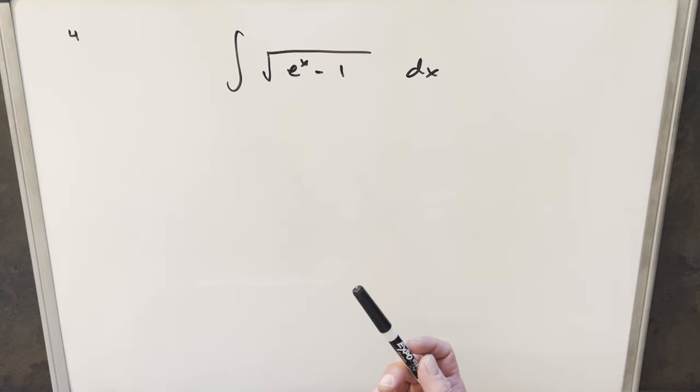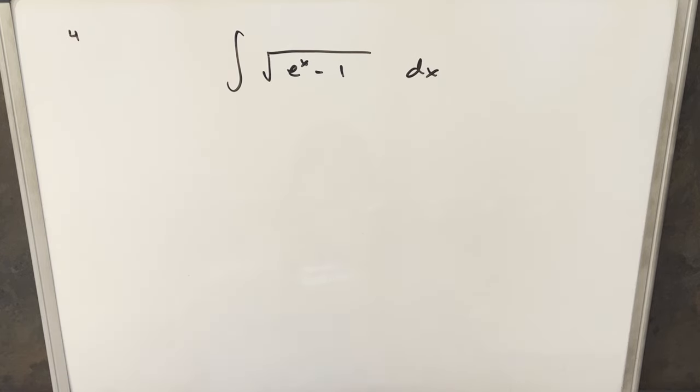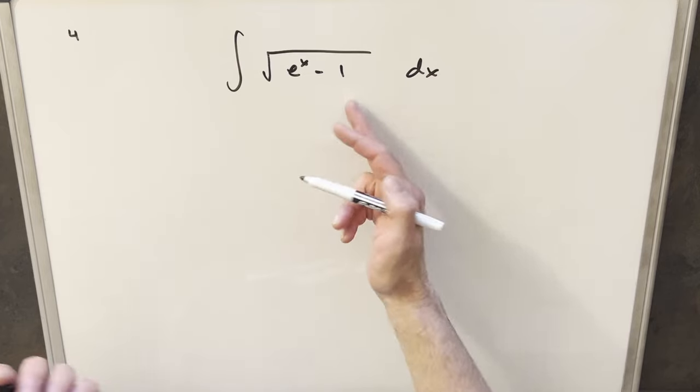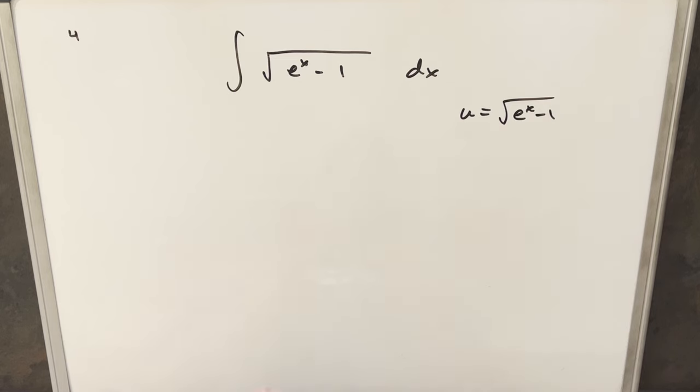Okay, I don't see that many options or different ways to approach it. We need to do, it looks like we need to do a u substitution on this, but there's nothing outside of the radical. I think what I'm going to do is let's just make my u equal to the whole thing. So I'm just going to set my u equal to the square root of e to the x minus one.